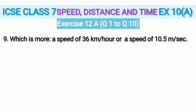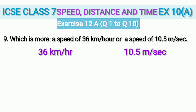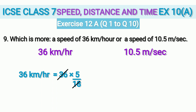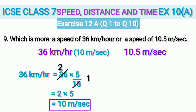Question 9: which is more — a speed of 36 km/h or 10.5 m/s? To compare we must use the same units. Convert 36 km/h to m/s by multiplying by 5/18: 36 × 5/18. Cancel 36 and 18 using the 18 times table — 18 twos are 36 — leaving 2 × 5 = 10 m/s. So 36 km/h equals 10 m/s, and therefore 10.5 m/s is the greater speed.